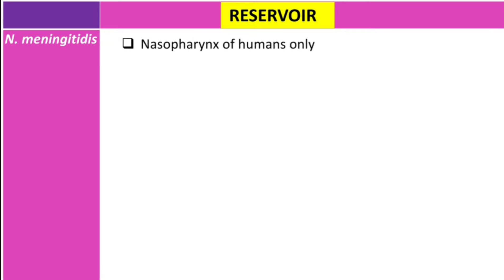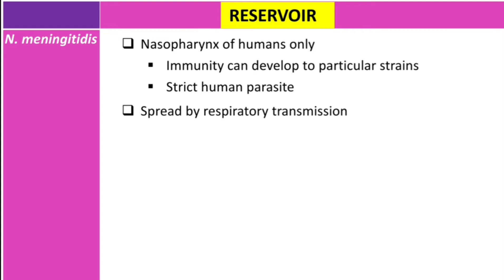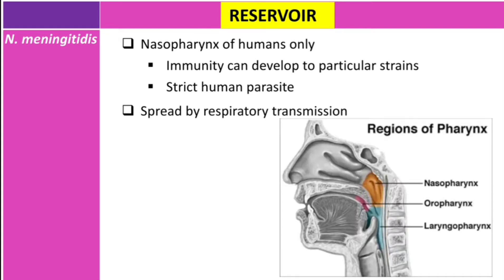The reservoir for Neisseria meningitidis is the nasopharynx of humans and humans only. Immunity against this bacteria can develop to particular strains, not all strains. This parasite strictly affects humans and can spread by respiratory transmission. It normally colonizes the nasopharynx, which has three parts: laryngopharynx, oropharynx, and nasopharynx — and it's the nasopharynx region that is usually colonized.